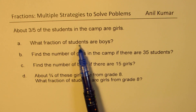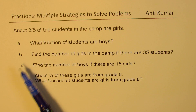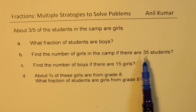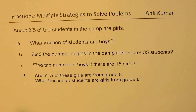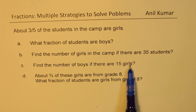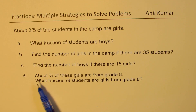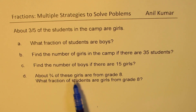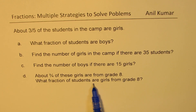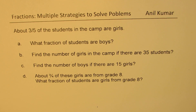A: What fraction of students are boys? B: Find the number of girls in the camp if there are 35 students. C: Find the number of boys if there are 15 girls. D: About three-fourths of the girls are from grade 8 — what fraction of students are girls from grade 8? You can pause the video, answer the question, and then look into my suggestions.